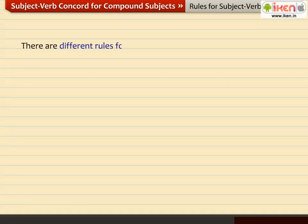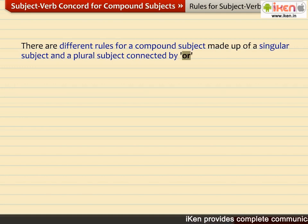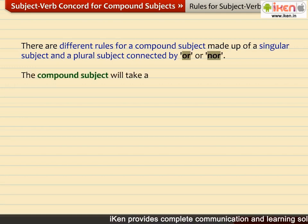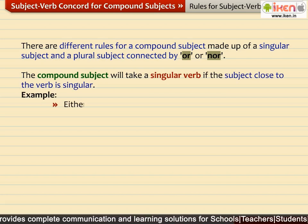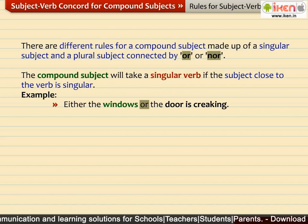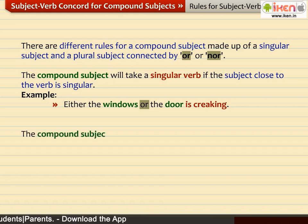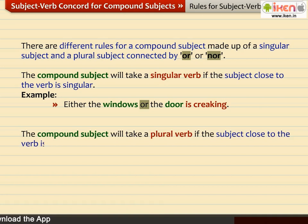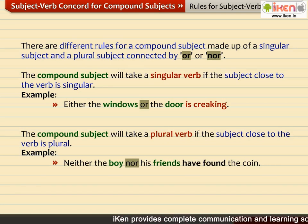There are different rules for a compound subject made up of a singular subject and a plural subject connected by OR or NOR. The compound subject will take a singular verb if the subject close to the verb is singular. For example: 'Either the windows or the door is creaking.' The compound subject will take a plural verb if the subject close to the verb is plural. For example: 'Neither the boy nor his friends have found the coin.' Since the plural noun FRIENDS is close to the verb, the compound subject takes the plural verb HAVE FOUND.